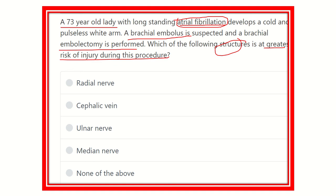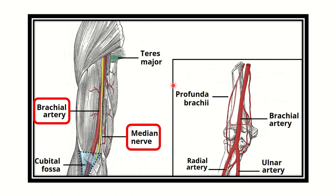The structure at greatest risk is one that is very closely located to the brachial artery, and during the embolectomy procedure this structure may get damaged. The options are: radial nerve, cephalic vein, ulnar nerve, median nerve, and none of the above.